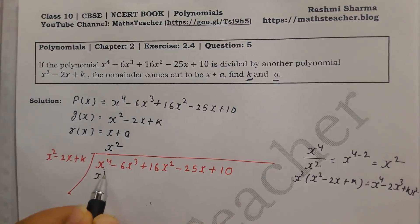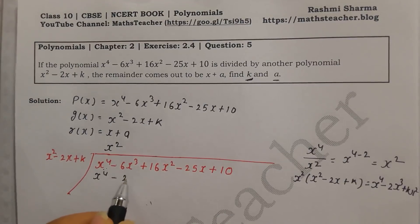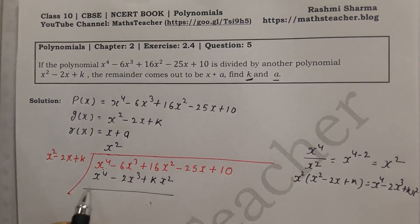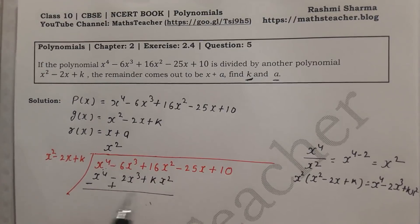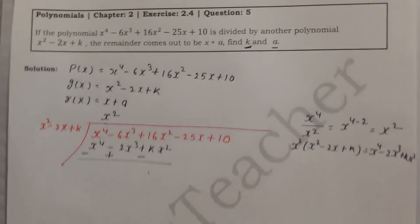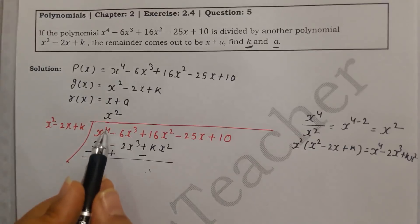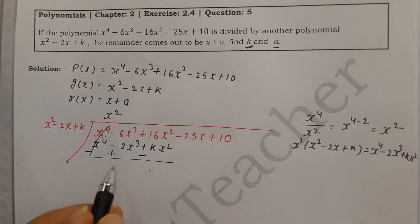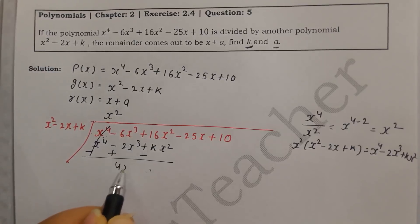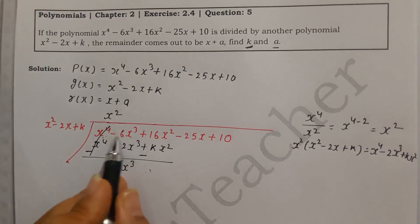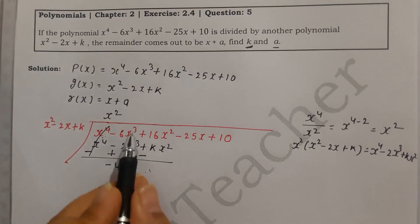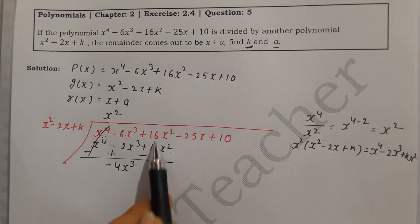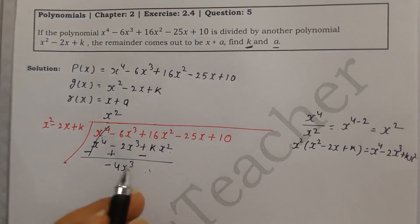We have x⁴ minus 2x³ plus kx². Now we do the sign change — minus, plus, minus — so the negative becomes positive and the positive becomes negative. The x⁴ terms cancel. For the x³ terms: minus 6x³ minus (minus 2x³) gives minus 4x³. For the x² terms, since k is not a number we write 16x² minus kx² and carry forward the remaining terms minus 25x plus 10.